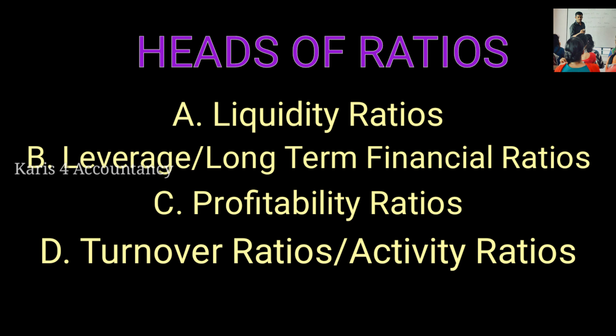The classification of ratios is: 1. Liquidity ratio, 2. Leverage ratio — long-term financial ratios, 3. Profitability ratio, 4. Turnover ratio — also called Activity ratio.